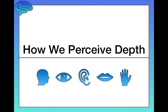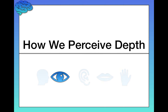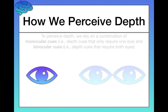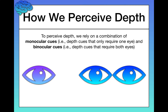In this video, we're going to continue our discussion of perception by learning about how we perceive depth — that is, how we engage in depth perception. To perceive depth, we as humans rely on a combination of two different types of cues that tell us about the depth of what we're looking at.